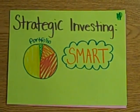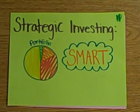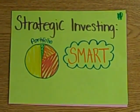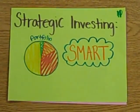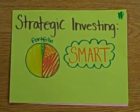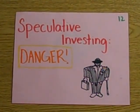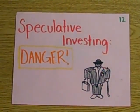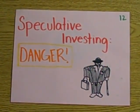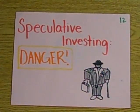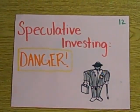Strategic investing is where you have a very stable put and take account and it will allow you to create a portfolio. Speculative investing is when you have a lot of experience investing and then you can start investing in high risk things such as gold.